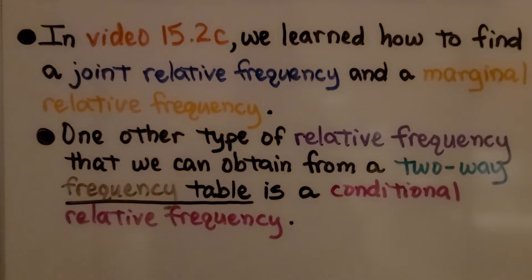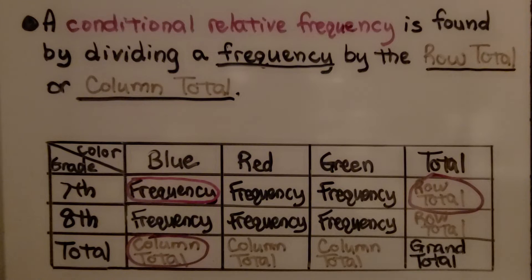One other type of relative frequency that we can obtain from a two-way frequency table is a conditional relative frequency. A conditional relative frequency is found by dividing a frequency, such as one of these six here, by the row total or the column total.